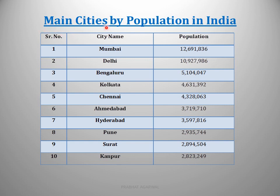Now we have the main cities by population in India — the most highly populated cities in sequence. Number 1 is Mumbai, also called the city of dreams and the financial capital of India, with a population of more than 1 crore, approximately 1,26,91,836. Second is Delhi, also more than 1 crore. Third is Bengaluru at 51 lakhs and something. Then we have Kolkata, Chennai, Ahmedabad, Hyderabad, Pune, Surat at 10th, and Kanpur.